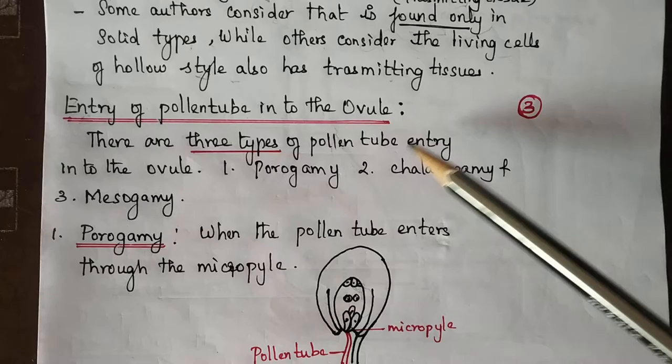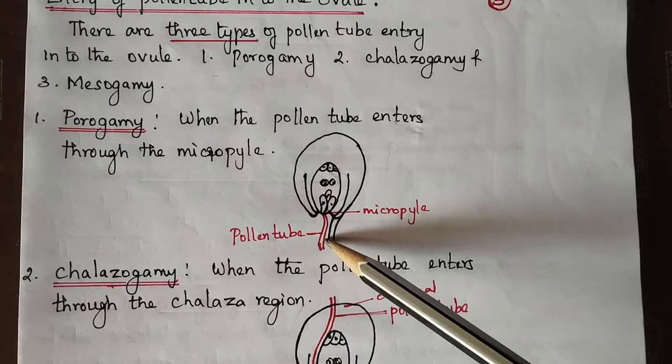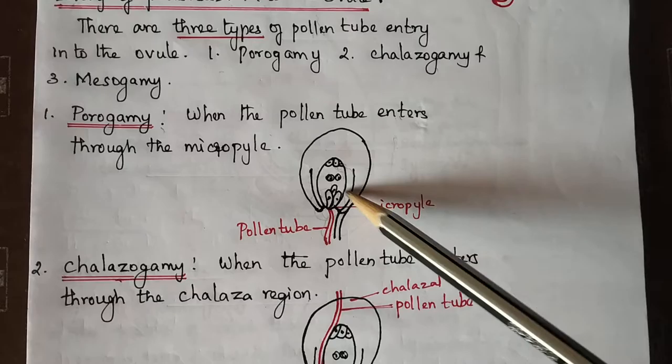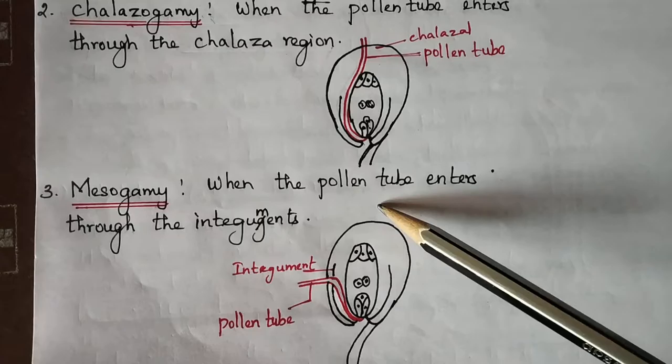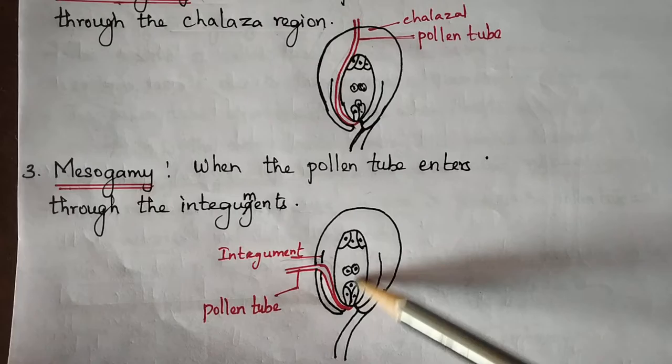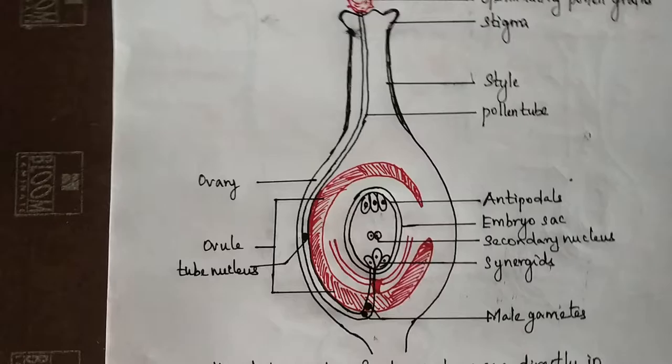There are three types of pollen tube entry into the ovule. The first is porogamy, when the pollen tube enters through the micropyle region. The second is chalazogamy, when the pollen tube enters through the chalaza. The third is mesogamy, when the pollen tube enters through the integuments — either outer or inner integuments.